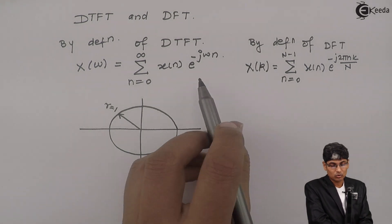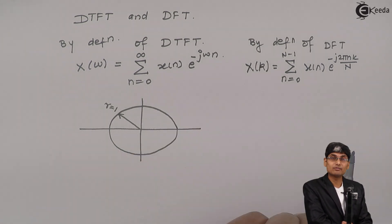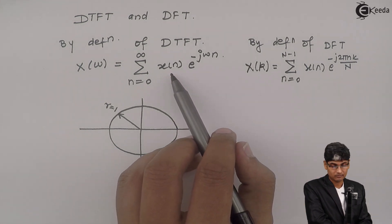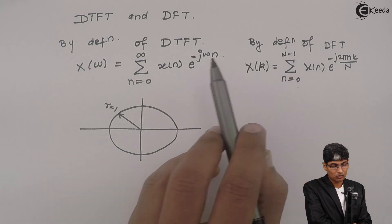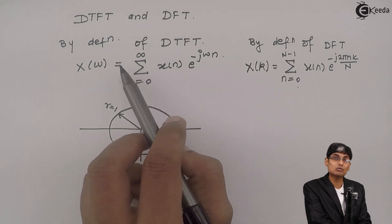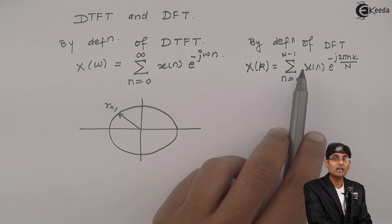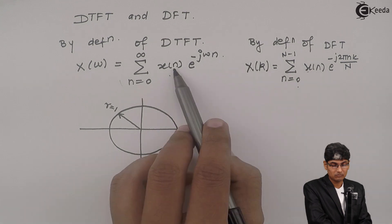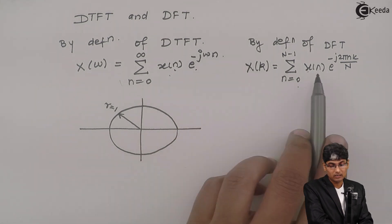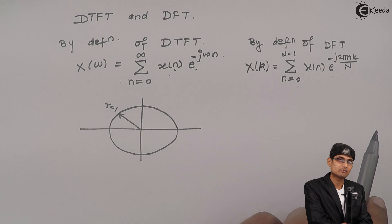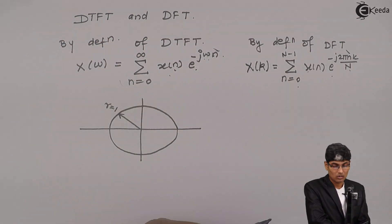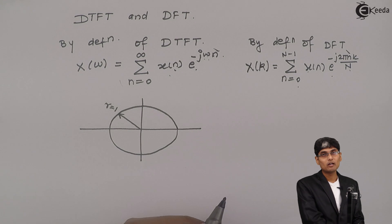Looking at the two equations, I can say that x(n) is the same in both. N going from 0 to N-1 versus n going from 0 to infinity. We will see why there is a restriction on n here. x(n) is the same and e^(-jωn) versus e^(-j something). So what remains is the omega.